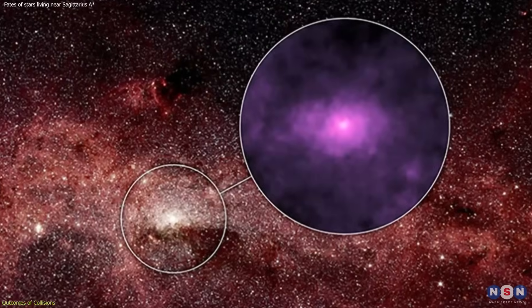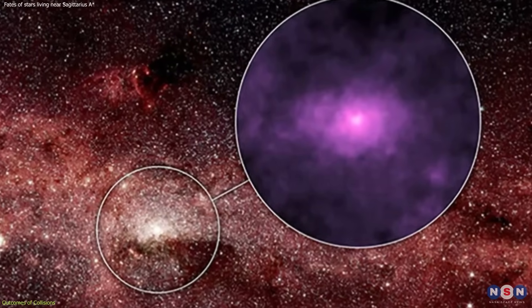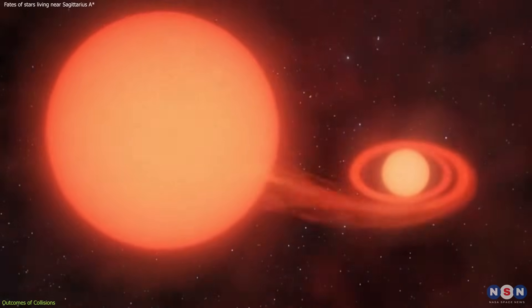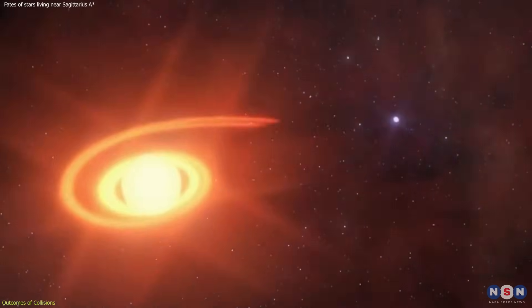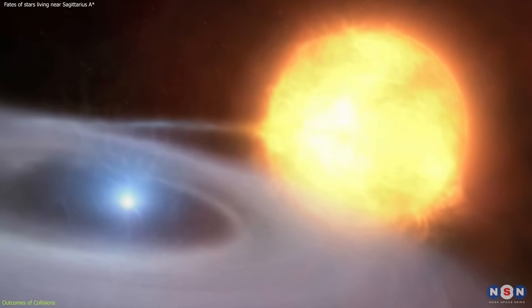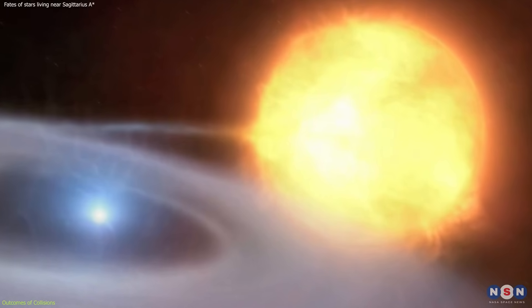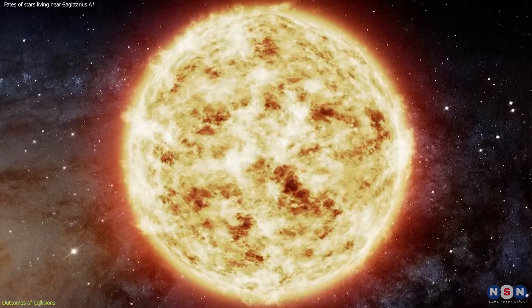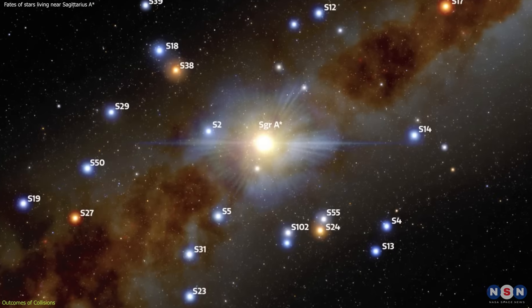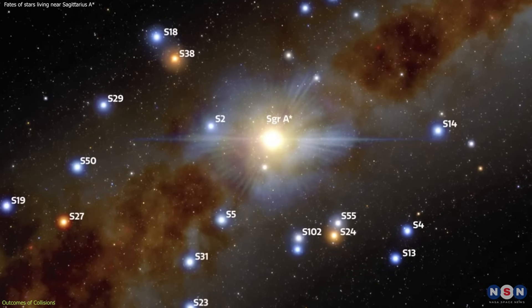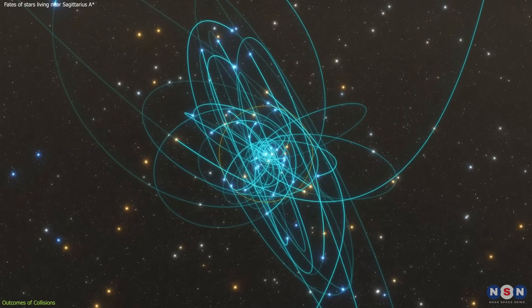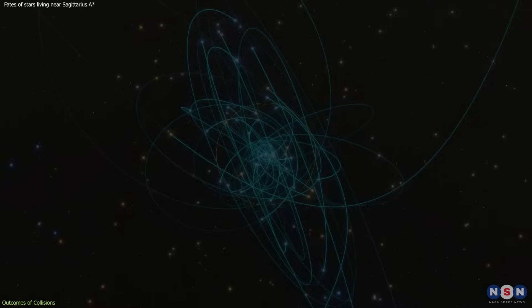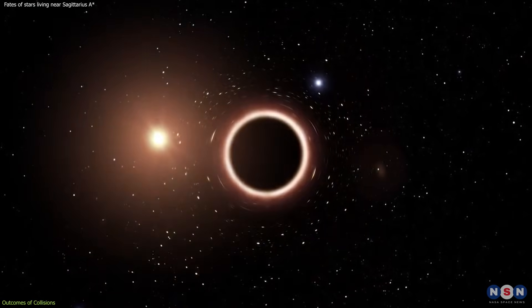This phenomenon leads to the presence of zombie stars in the galactic center, stars that have gained new life by consuming their neighbors. These massive, rejuvenated stars, however, pay a price for their newfound youth. Their increased mass leads to a faster consumption of their nuclear fuel, resulting in a shorter overall lifespan. Thus, while they may appear young and vibrant, they are, in fact, living on borrowed time. This paradoxical situation highlights the complex and often counterintuitive outcomes of stellar collisions near the Milky Way's central black hole.